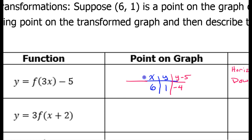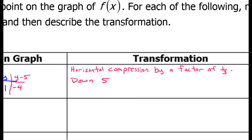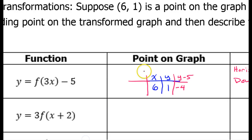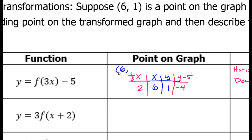I'm also going to need a new x value. Remember, this was a horizontal compression by a factor of 1 third, so I get my new x value by multiplying my old x value by 1 third. That will be a horizontal compression. So 1 third times 6 is 2. My old point was (6, 1), and the new point is going to be (2, negative 4).